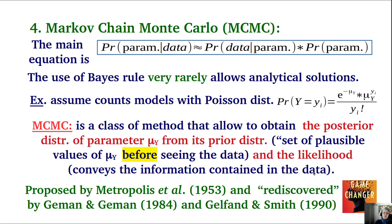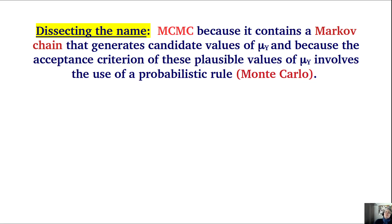This algorithm was proposed in a completely different context — integrating complex differential equations — by Metropolis et al., published in a journal of physical chemistry, and rediscovered by Gelman and Gelman in image analysis, and by Gelfand and Smith in Bayesian statistics in the 1990s. It was a game-changer because it allowed Bayesian methods to be used for any conceivable problem. MCMC is named so because it contains a Markov chain generating candidate parameter values, and the acceptance criterion involves a probabilistic rule — the Monte Carlo part.